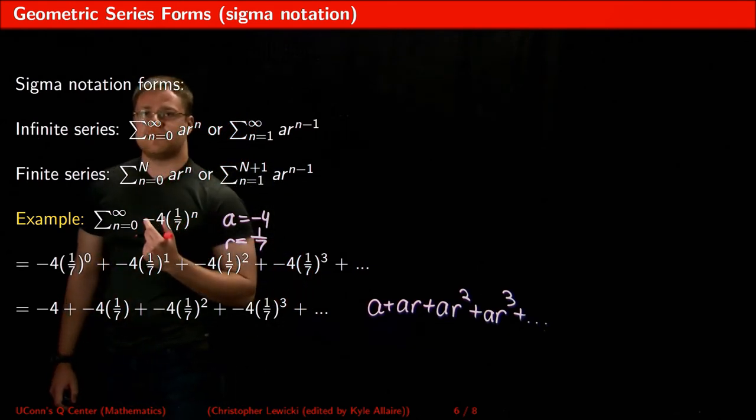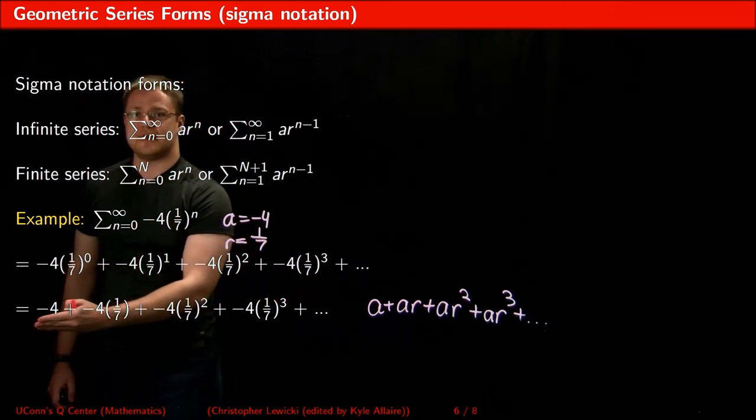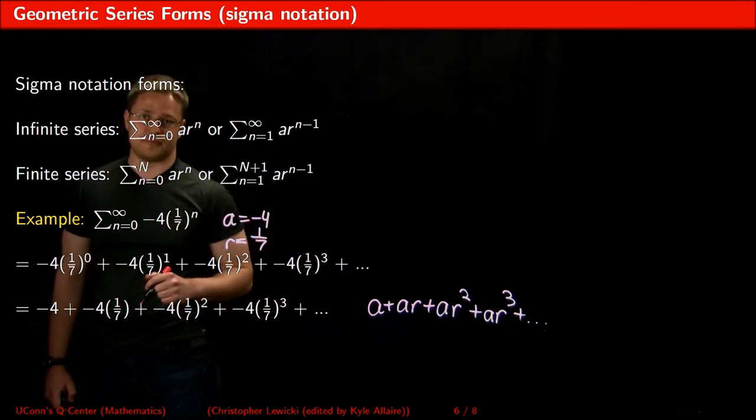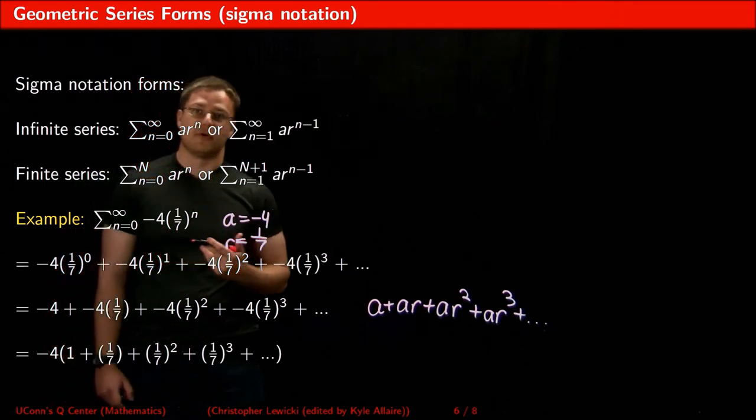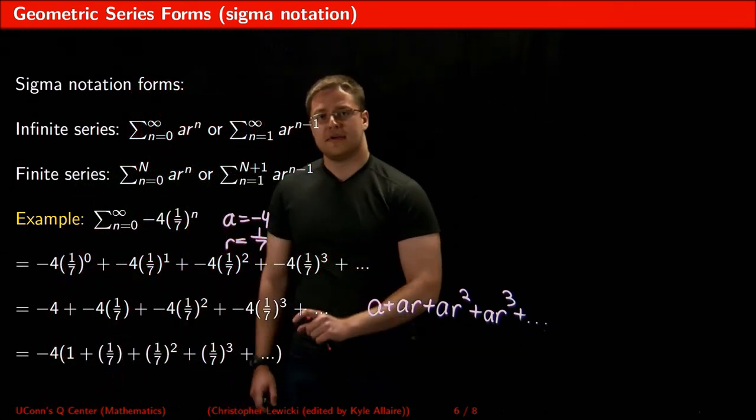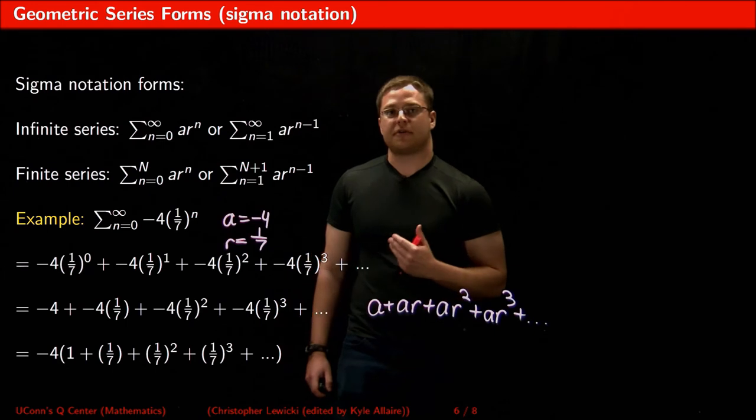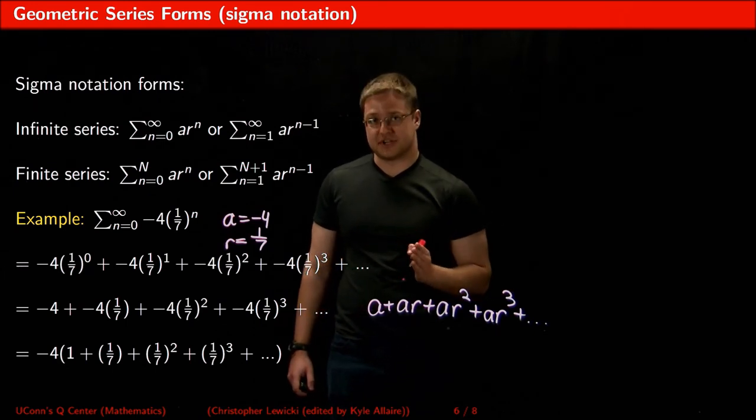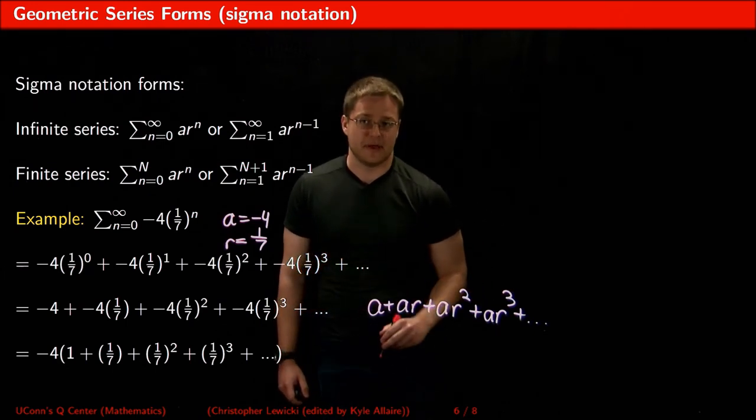With negative 4 being the first term of this series, and being a common factor in all of the terms, I could factor out the negative 4, and notice that when I write it this way, it looks just like the factored general form of an infinite geometric series.